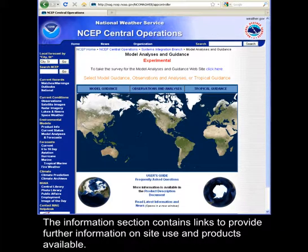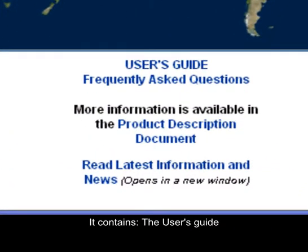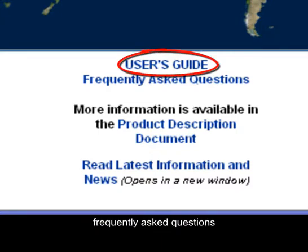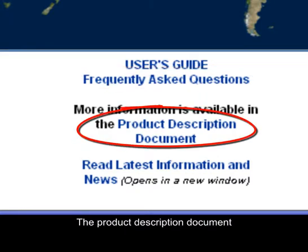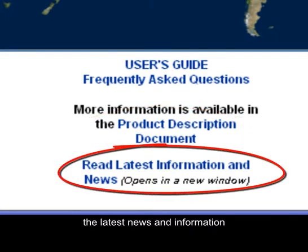The information section contains links to provide further information on site use and products available. It contains the user's guide, frequently asked questions, the product description document, and the latest news and information.